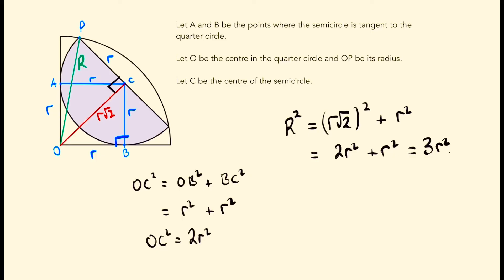Now the question has asked us to figure out the fraction of this shape that is shaded. So that is to figure out the area of the semicircle, so πR squared over 2, divided by the area of the quarter circle, which is π capital R squared over 4.